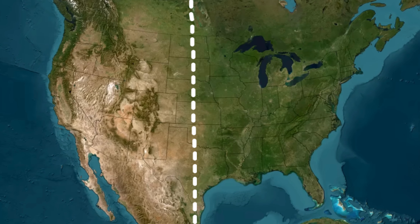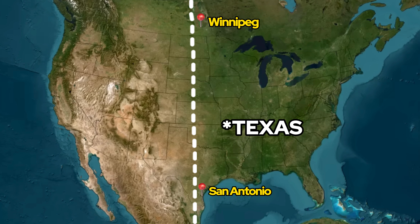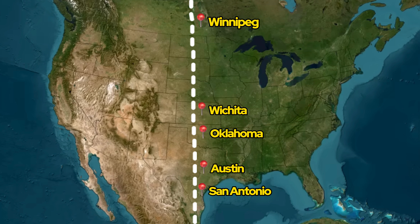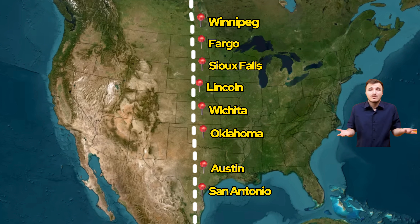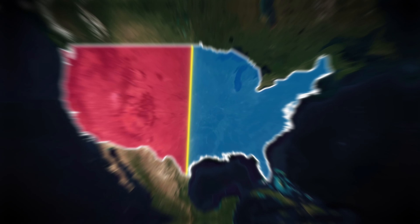This line is known as the 98th Meridian. It follows an almost vertical path stretching from Winnipeg in Canada in the north to San Antonio, New Mexico in the south, with many major cities in between such as Austin, Oklahoma, Wichita, Lincoln, Sioux Falls, and Fargo. This invisible line sharply splits America into two halves: a populated east and a not-so-populated west.